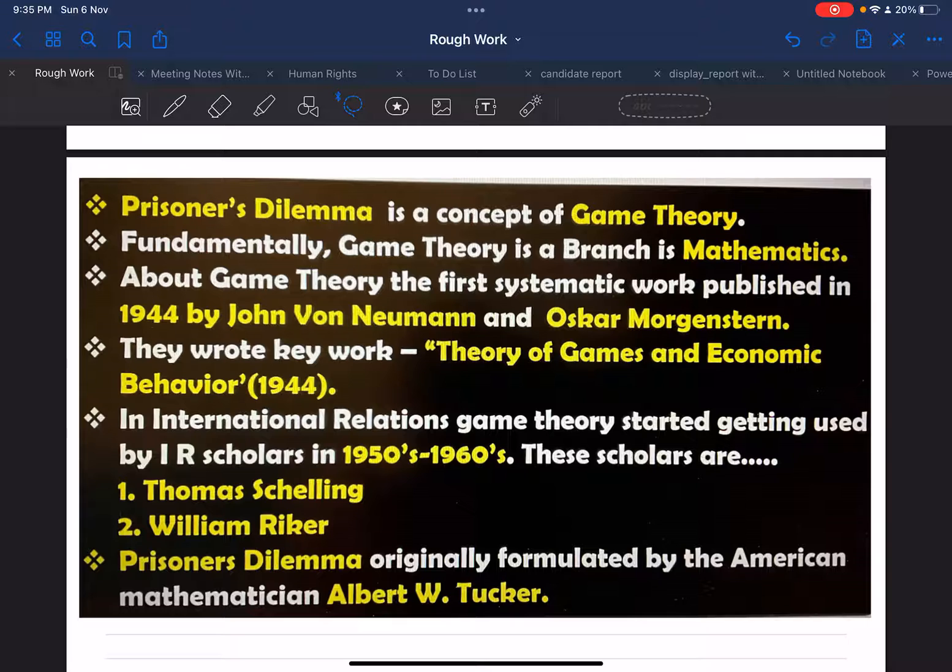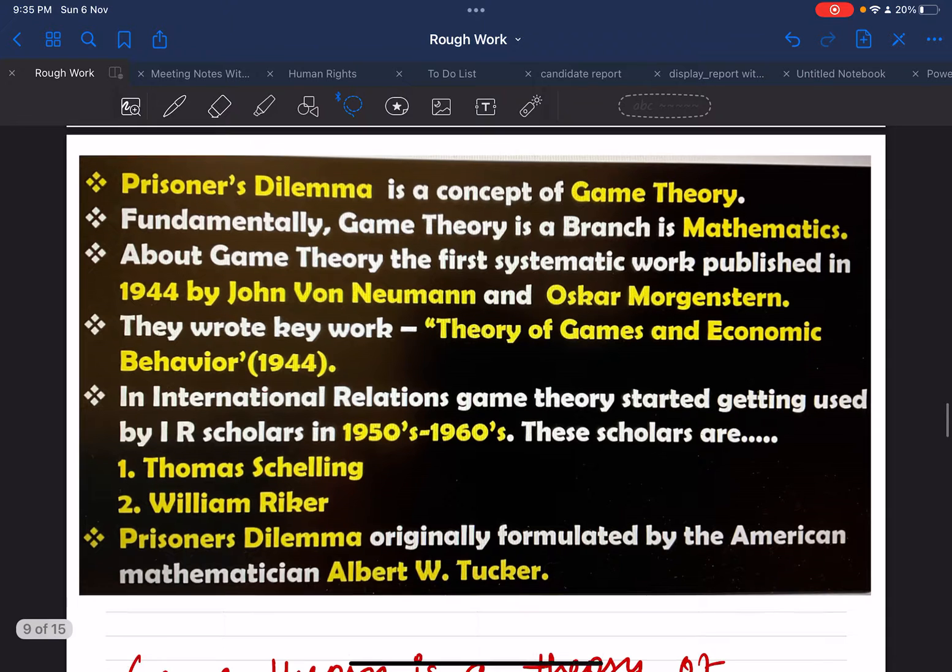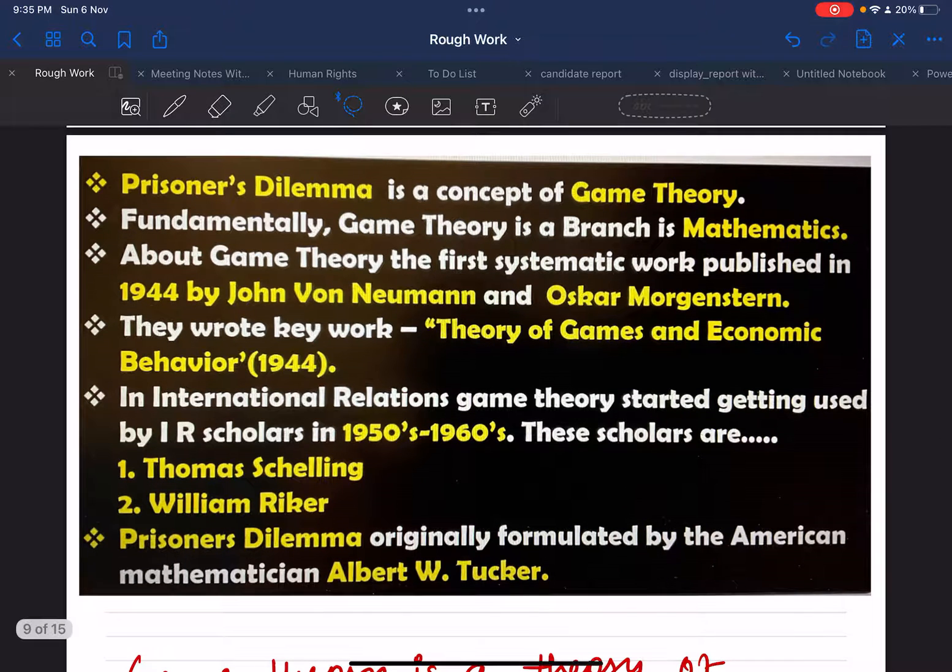Without further ado, I'll start with some historical background or origin of this theory. Fundamentally, game theory is a branch in mathematics. About game theory, the first systematic work was published by Von Neumann in 1944 and Morgenstern.